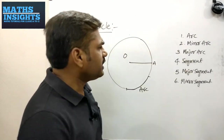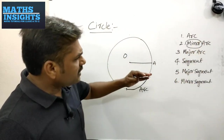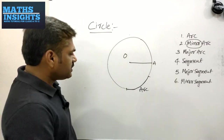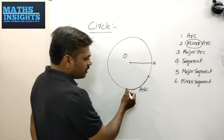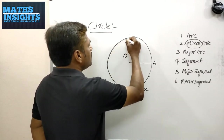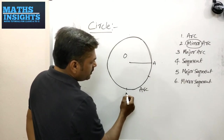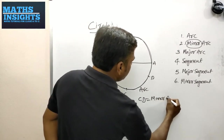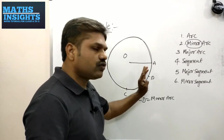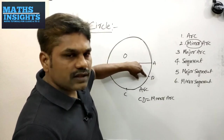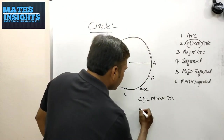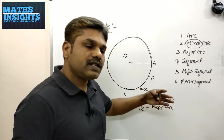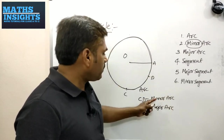Coming to the minor arc: the name itself says that minor means small. When the length of the arc is small compared to the length of the remaining part of the circle, if you name the points C and D, then CD is the minor arc, because measuring the length from C to D is less than the length from D back to C. Therefore, the arc from D to C is called the major arc. Major means the arc which has more length compared to the minor arc.